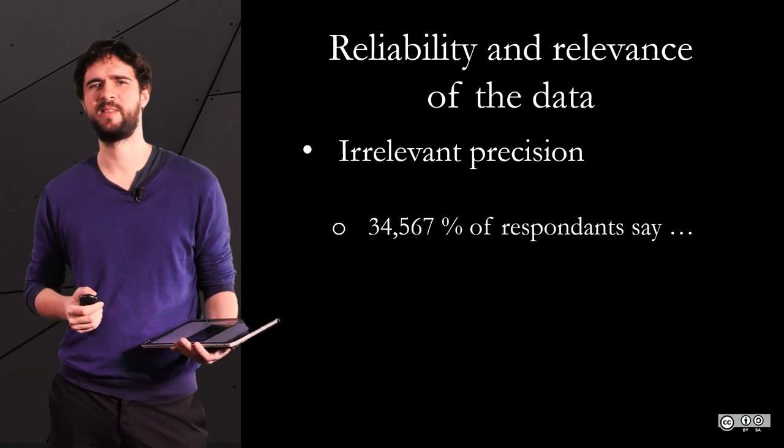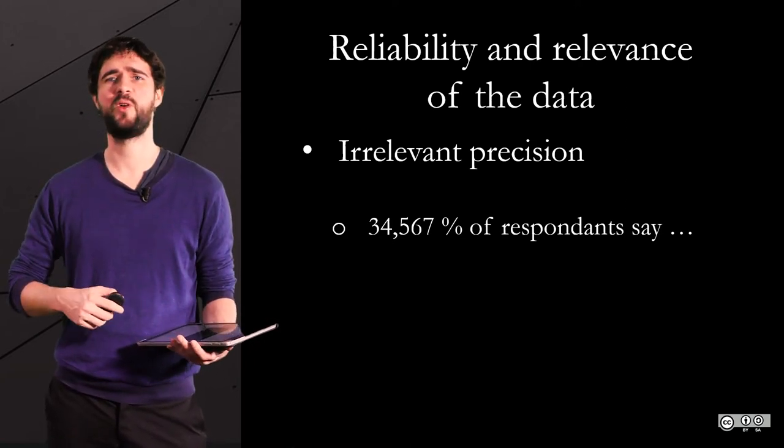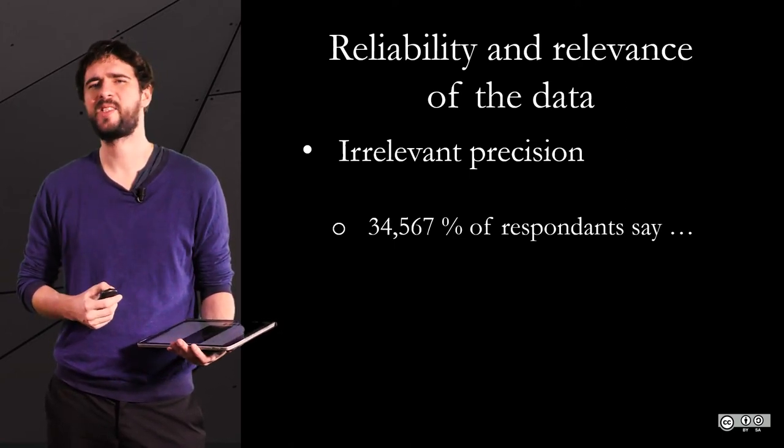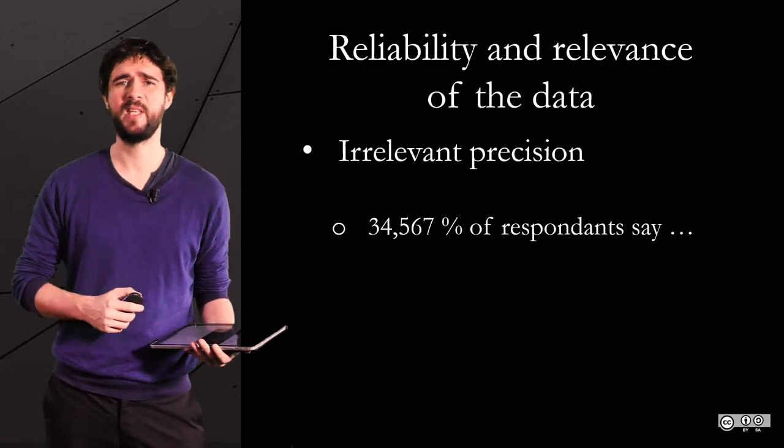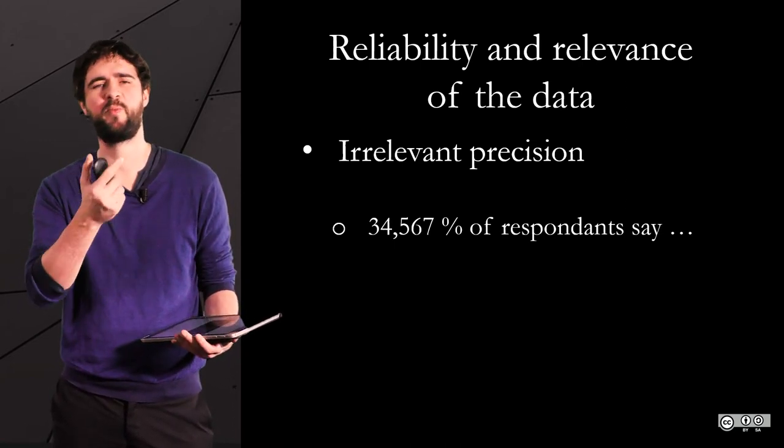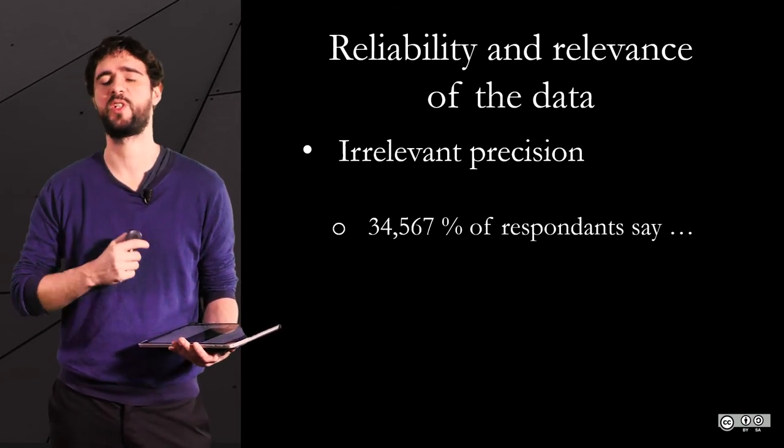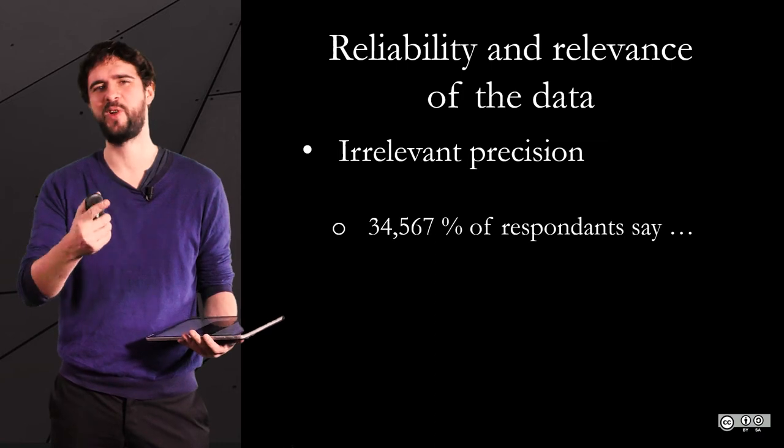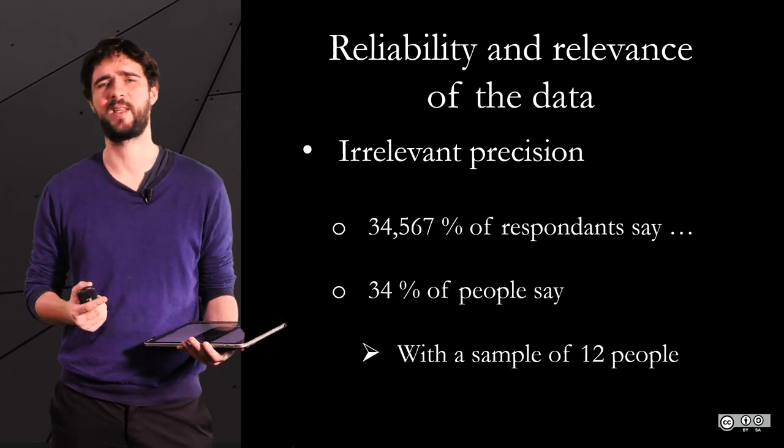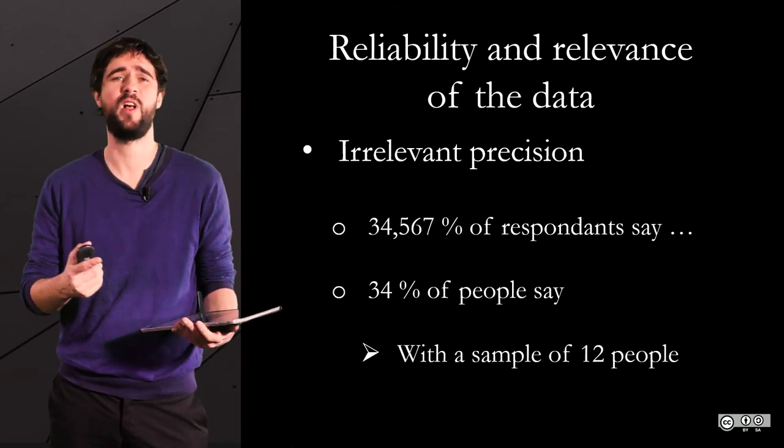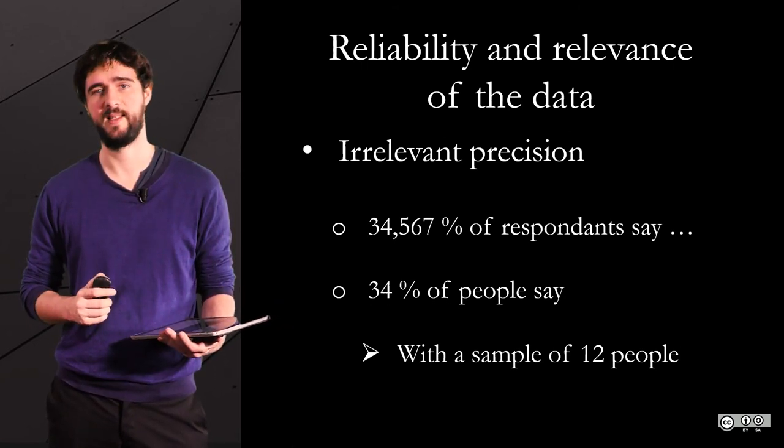So many things can happen in the data collection process that make this kind of precision irrelevant. And I'm not even mentioning data processing, but also the choice of statistical tests and so on. There are so many mistakes that can be introduced that make the precision that you see in those numbers questionable. Another issue, for instance, is when you use percentages on very small samples, like 34% of people said, and the sample is only 12 people. It makes absolutely no sense.